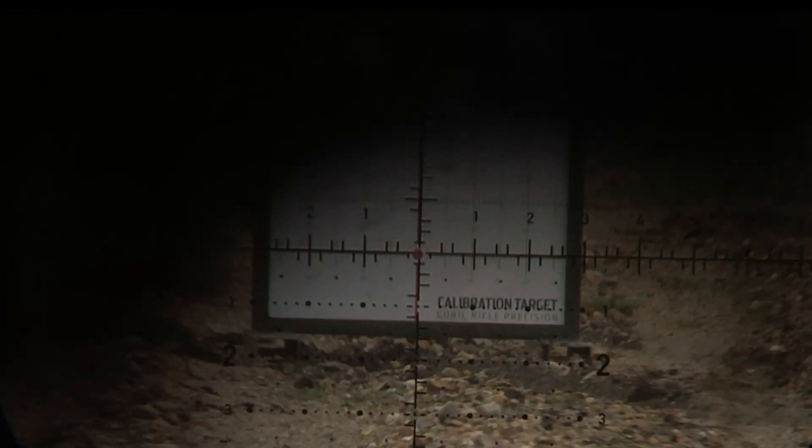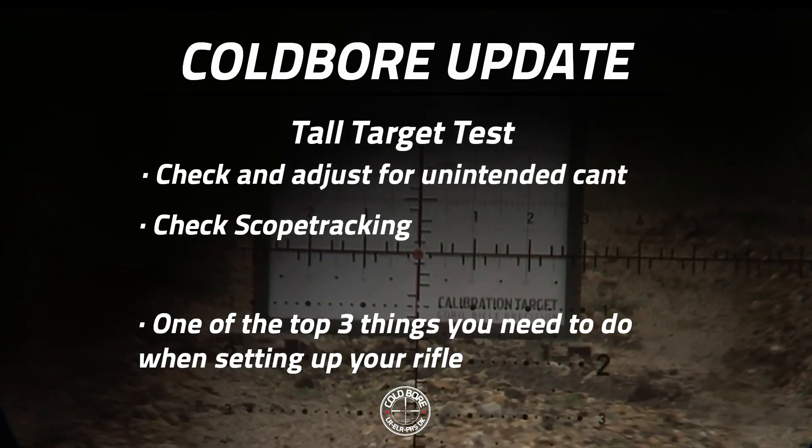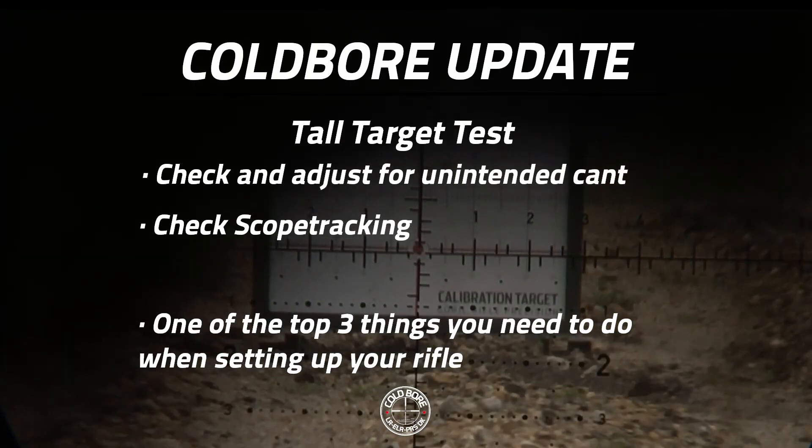Now I'm done with the test I have made a valid test and I have valid results. If there was any scope tracking error I would just change the scope correction factor in my ballistics app that I'm using and I would still have just as precise predictions to my trajectory and therefore I could now trust both my rifle setup and the predictions that my ballistic solver gives me. Solid data in, solid data out.